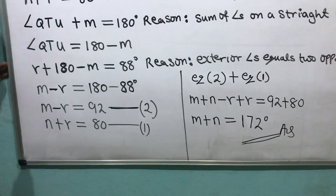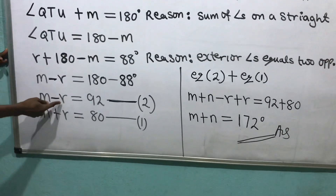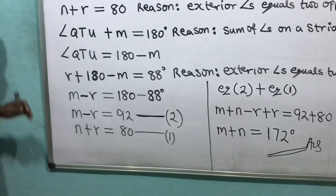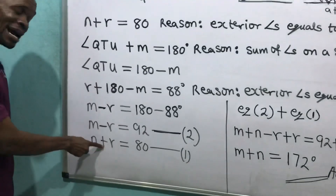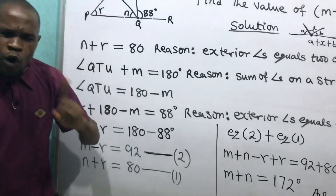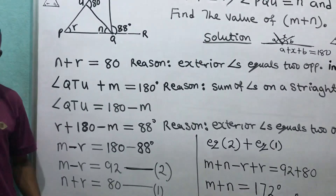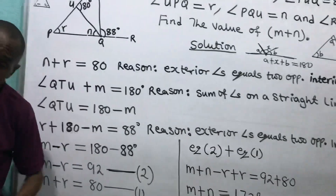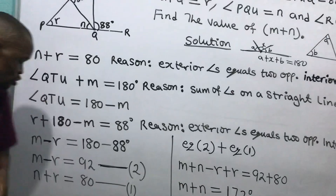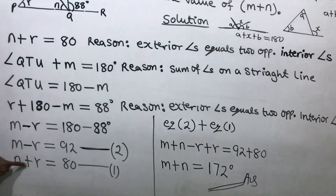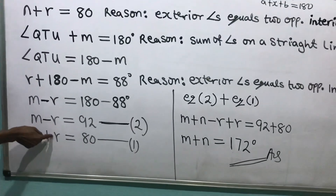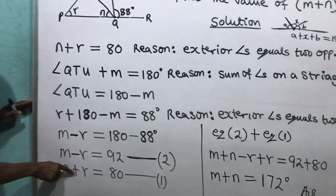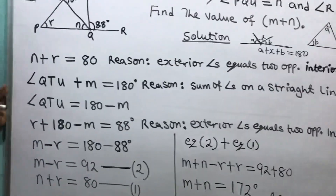I will use elimination method to solve it. For me to eliminate, I look at the coefficients of R: both are 1. The sign of R in equation 2 is negative, and in equation 1 is positive. Since they have different signs, I'm going to use addition.